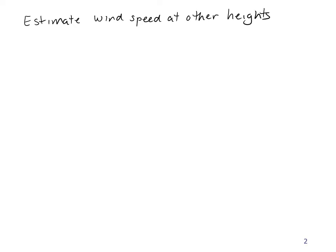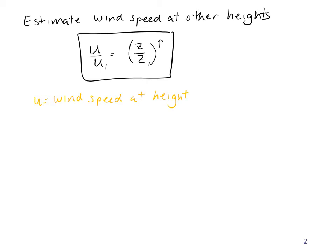We can use this equation: u over u1 equals z over z1 to the p power, where u is the wind speed at height z, and u1 is the wind speed at height z1, this is often our reference height and reference wind speed.